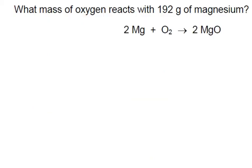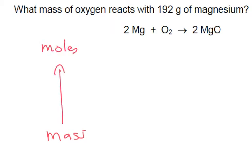What mass of oxygen reacts with 192 grams of magnesium? We'll start off with mass going over to moles. We've got 192 grams of magnesium, so we want to work out how many moles. 192 divided by the atomic mass of magnesium, which is 24 — that gives us 8 moles.